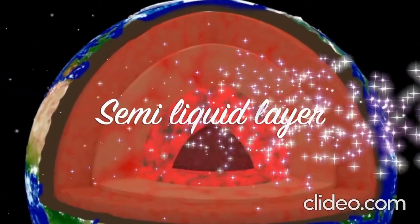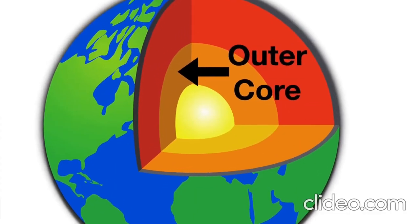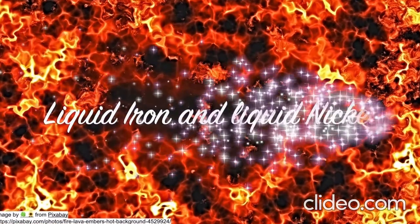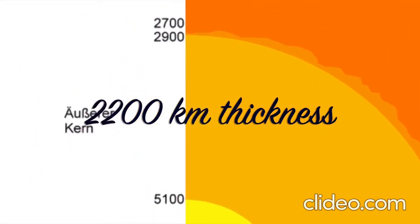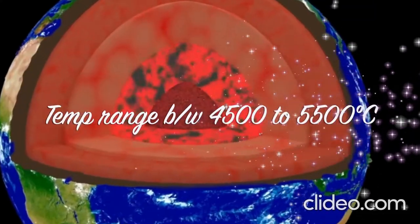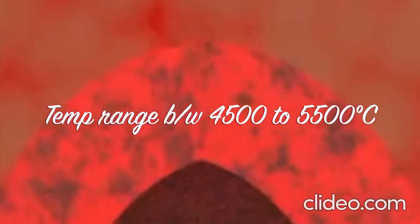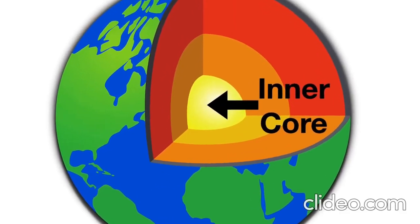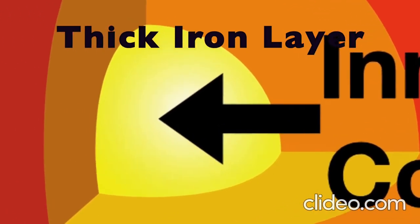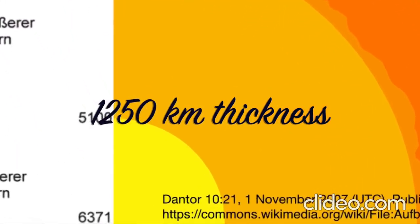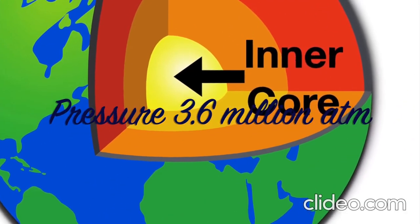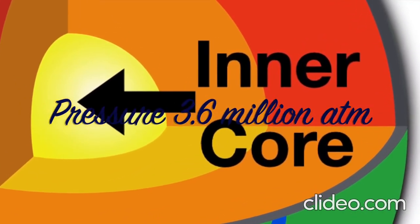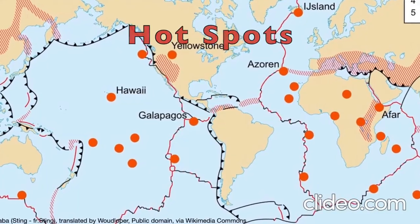The mantle layer is in the form of semi-liquid. The third layer is called the outer core, which mainly consists of iron and nickel in liquid form. The thickness of this layer is around 2,200 kilometers and the temperature ranges from 4,500 to 5,500 degrees Celsius. The innermost layer is called the inner core. This layer of dense and hard iron is 1,250 kilometers thick, the temperature is around 5,200 degrees Celsius, and the pressure is almost 3.6 million atmospheres.